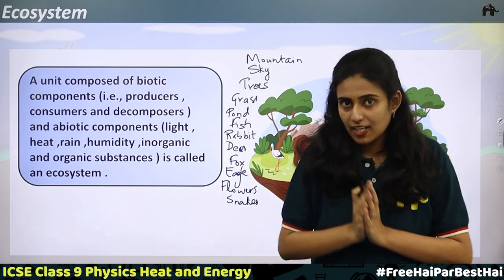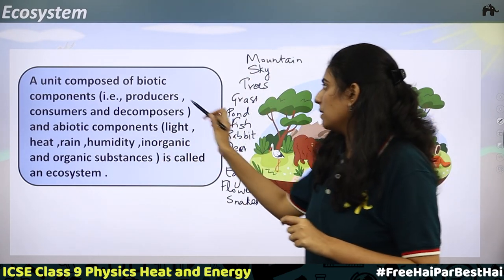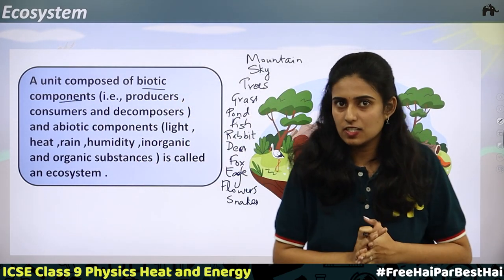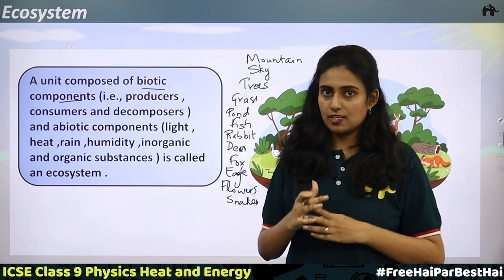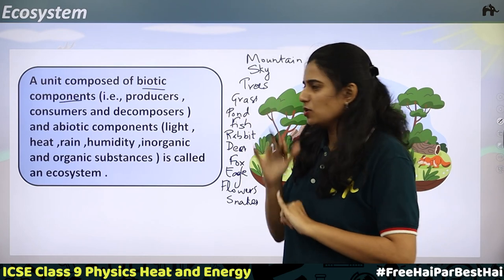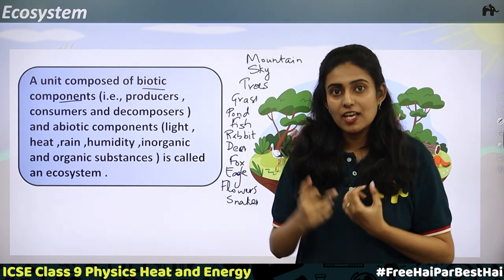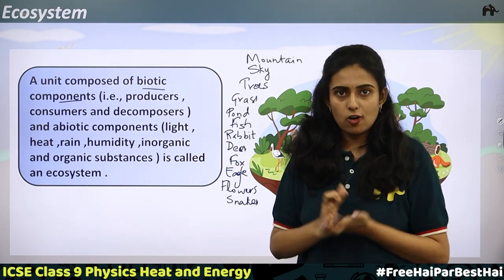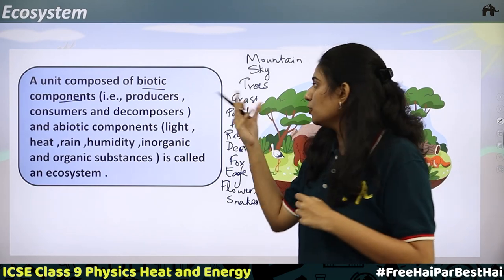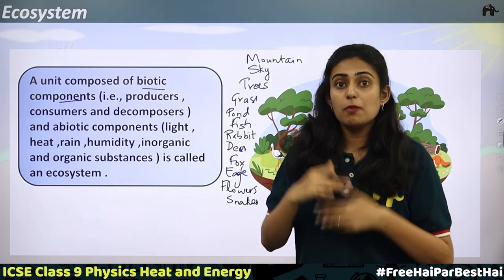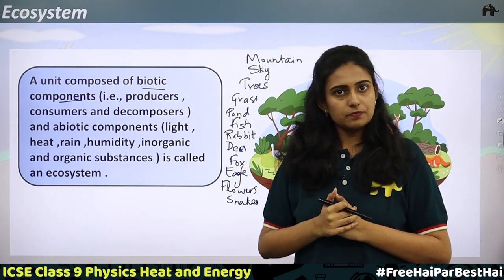This we call an ecosystem. We can define an ecosystem as a unit composed of biotic components — that is living things — which includes producers, consumers, and decomposers. Plants are producers; they produce food using sunlight, chlorophyll, water, and carbon dioxide. This food is used by herbivores, and herbivores are eaten by carnivores. So from one to another, energy is moving.